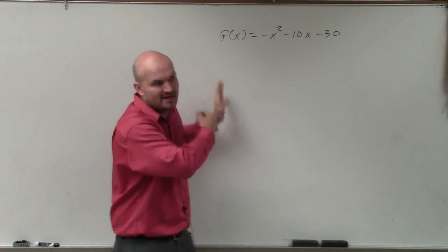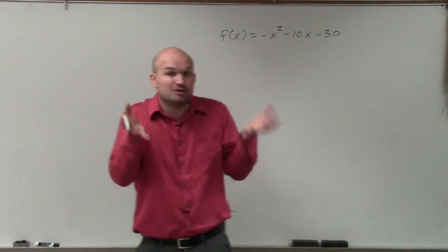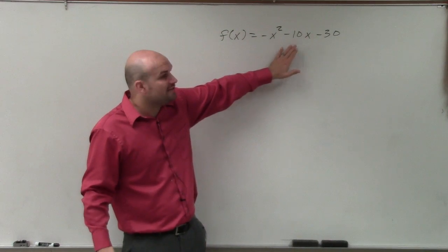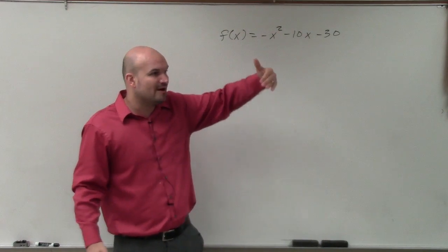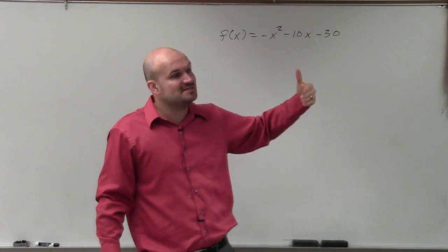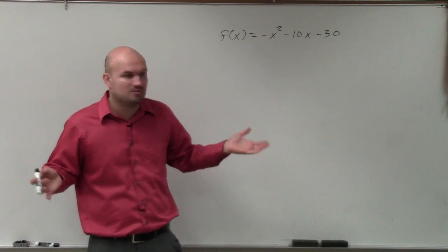Group the terms, factor out the negative 1, do b divided by 2 squared, add, subtract, and then you write it in vertex form, and you can graph it. And there's nothing wrong with that. This is a perfectly fine equation to go and do that for. However, if you have trouble with completing the square, or you find this method easier to do, then you can absolutely do this method for all functions as well.